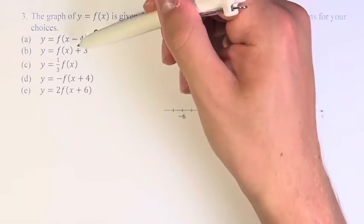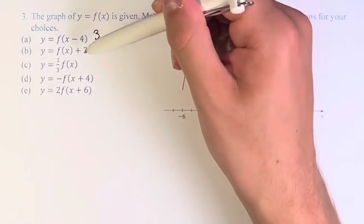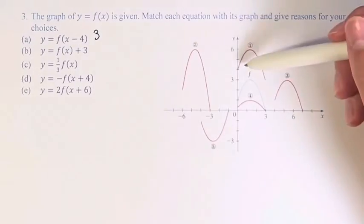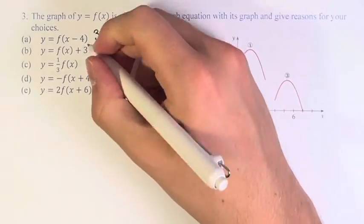That is in contrast with this. The addition is done outside of it, so it is vertically shifting 3 units upward. That matches with number 1.